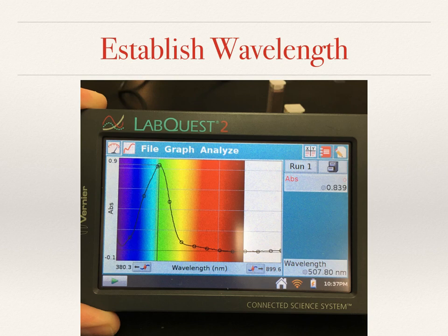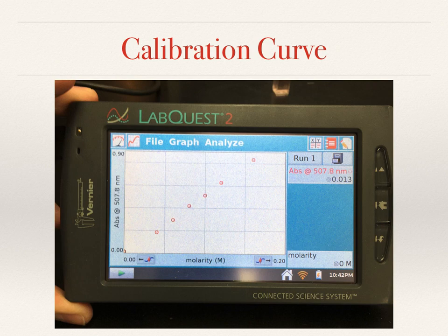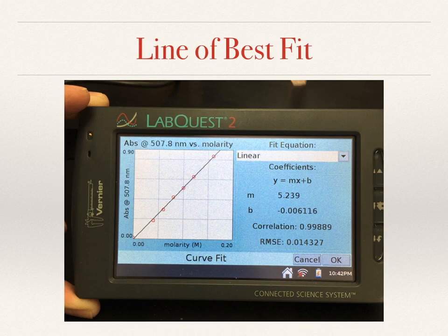Next, what we do is create a calibration curve. We prepare several standard solutions where we know the concentration, and we find out the absorbance of each at each concentration. I used Roxanna, Emma, and Lauren's solutions here — they were awesome. I collected all of the absorbance, inputted the concentration to form our graph, and then had the LabQuest do a line of best fit. Our line of best fit gives us our slope, our y-intercept, and our correlation value, which tells us how close our data points are to the line.